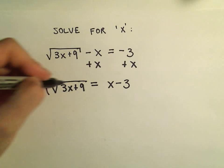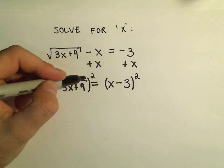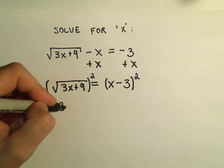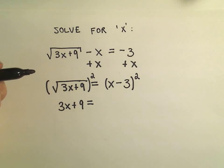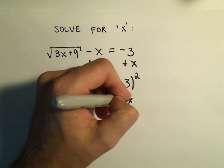Now again to get rid of the square root we simply square both sides. The square root of 3x plus 9 squared is just going to give us 3x plus 9. x minus 3 squared we have to FOIL that out or distribute everything out.